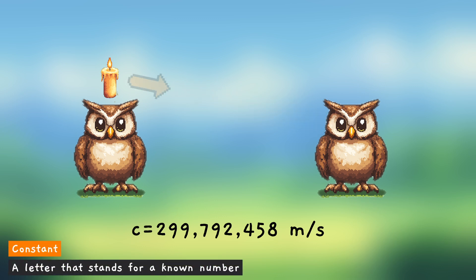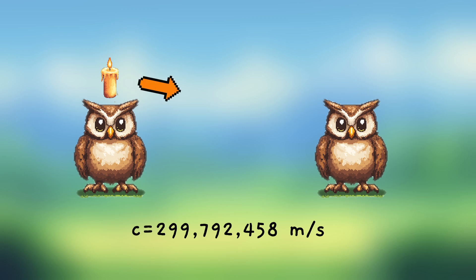Previously, we had an equation where we did not know what the number was. That's why we call it a variable. Here we do know what the number is. We do know the speed of light. And because we know what it is, its value never changes. We call it a constant.